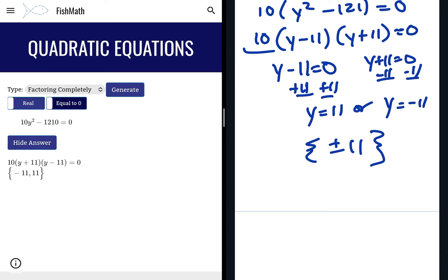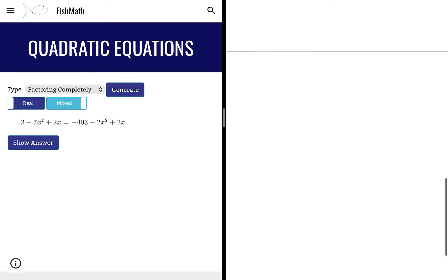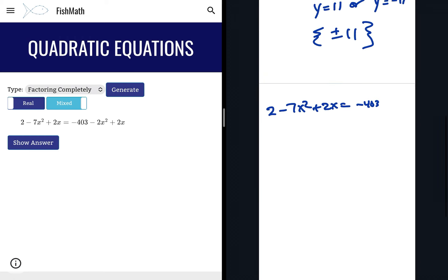Now it could be a little more complicated. If we have something like this where we've got things all over the place, if I turn this mix slider on, what you'd have to do first is get it equal to 0. So 2 - 7x² + 2x = -403 - 2x² + 2x. First thing I notice is there's 2x on both sides, so I'm going to get rid of that. Then I've got x² all over the place, so I'm going to add the 7x² over. I'm going to subtract the 2 over.